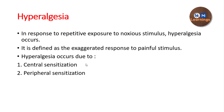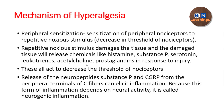Hyperalgesia occurs because of sensitization, and this sensitization occurs at two levels. It occurs at the receptor level, which is called peripheral sensitization, because the receptors are at the peripheral part. And if the sensitization occurs at the spinal cord level — at the dorsal horn neuron level — it is called central sensitization. We are going to see one by one how peripheral sensitization occurs and then how central sensitization occurs.